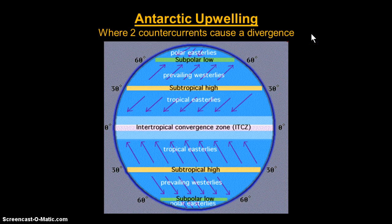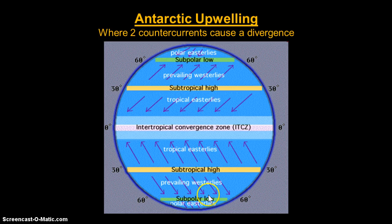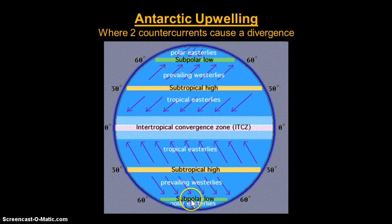Antarctic upwelling is based on the same phenomena — removing water from the surface ocean that has to be replaced from the bottom — but it's driven a little bit differently. We'll quickly review our wind patterns with respect to Antarctica. We have a subpolar low and a polar high down here, and then a subtropical high. Going from high to low in the southern hemisphere, everything is deflected to the left.